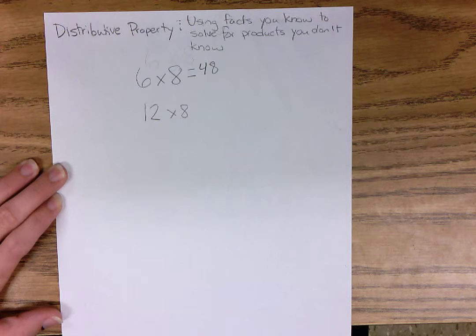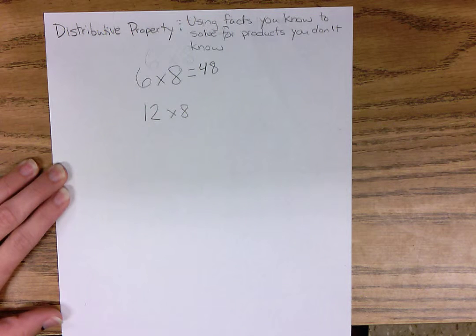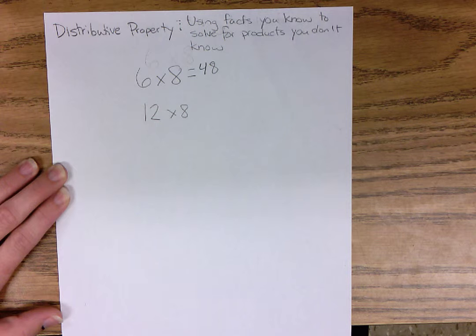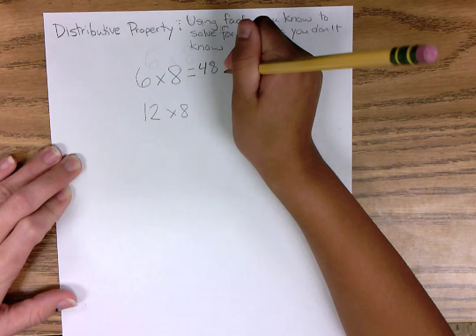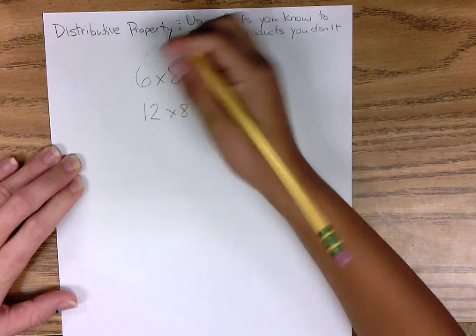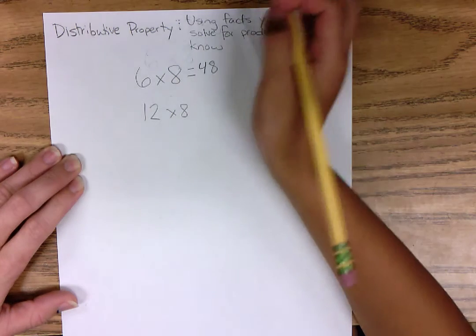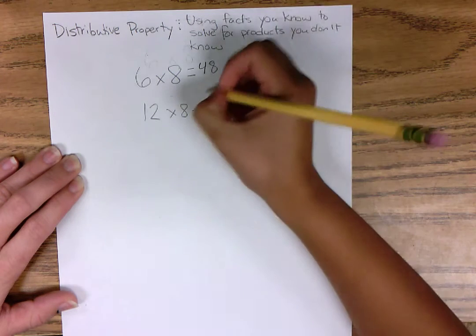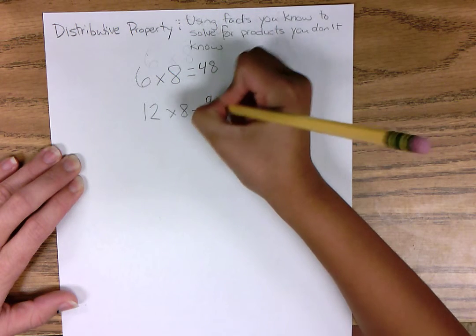Basically, I did 6 times 8, and 8 equals 48, and then I remembered 6 was part of 12. And then I said, why can't I do the same question? So I did 6 times 8, and then I did 6 times 8 again, and I got 48, so I had to add them all together. And then it got me 96.